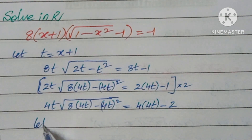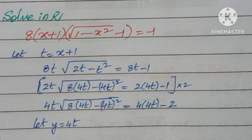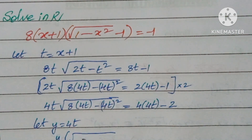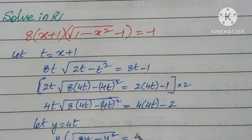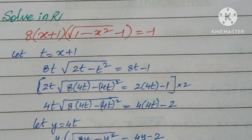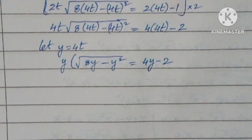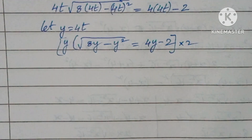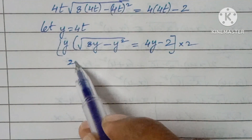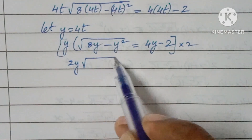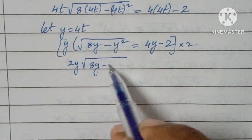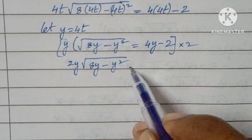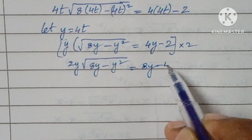Now let us take y equal to 4t. Multiplying both sides by 2, we get: 2y into square root of (8y minus y squared) minus 4 into square root of (8y minus y squared), equal to 8y minus 4.